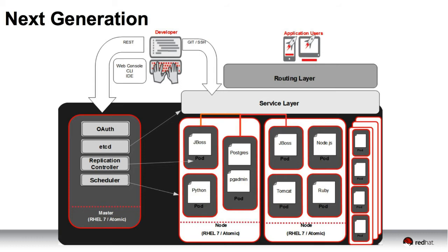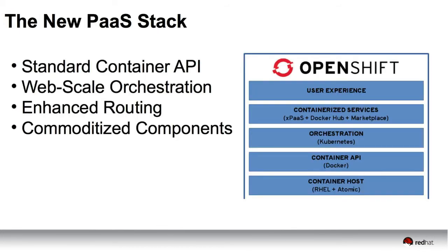We have one routing layer — you don't see an HAProxy standing up in front of every application anymore. You'll have one for the platform. It'll be customizable, HA, and you'll be able to integrate it with your own data center fabric. We've had a lot of requests to move to a central routing layer. The developer experience changes — we want to keep the developer experience that we have today. The developer shouldn't have to know anything about Docker, just like he didn't have to know anything about gears. He can come in from his IDE, from his Git commits. We now have developers who want to bring Docker images from their laptop or Docker Hub into the platform, so we had to allow that pull from local repos.